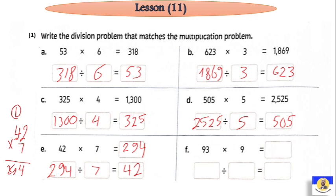Next, Letter F: 93 by 9. Using standard algorithm: 9 by 3 equals 27, carry 2. Then 9 by 9 equals 81, plus 2 equals 83. So the answer of the multiplication is 837.